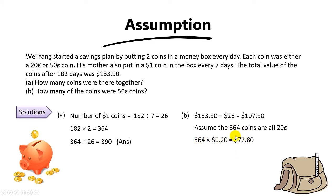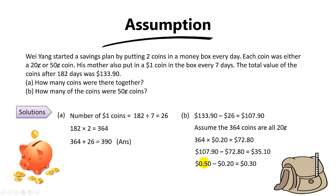Assuming all 364 coins are 20 cents: 364 times 20 cents equals $72.80. Then take $107.90 minus $72.80 to find the big difference, which is $35.10. Next, find the small difference: 50 cents minus 20 cents equals 30 cents. Finally, to find the number of 50 cent coins, take the big difference divided by the small difference: $35.10 divided by 30 cents equals 117 fifty-cent coins.